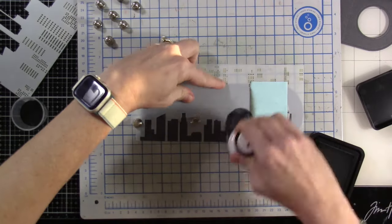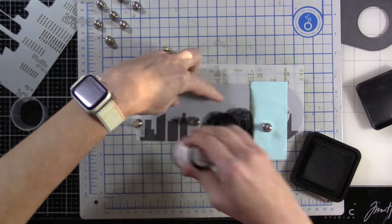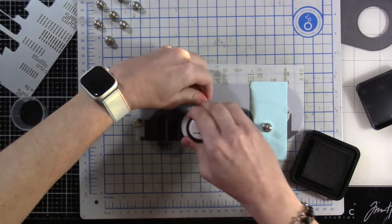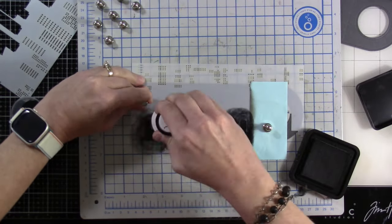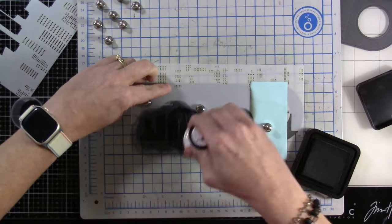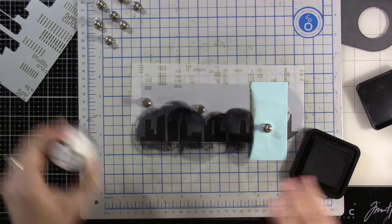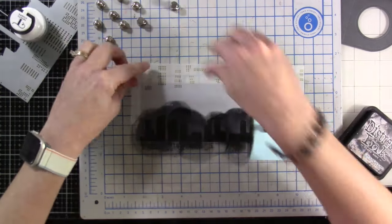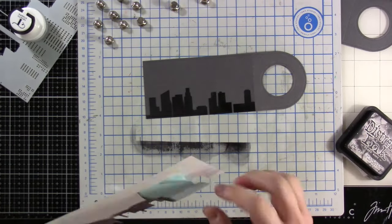You'll notice the cardstock that I used is kind of a dark gray, but it's not so dark that I can't use some black ink on the background. So we're going to use a blending buddy and some black soot ink. This is my favorite ink for ink blending because it's very black. It's just a nice black ink.